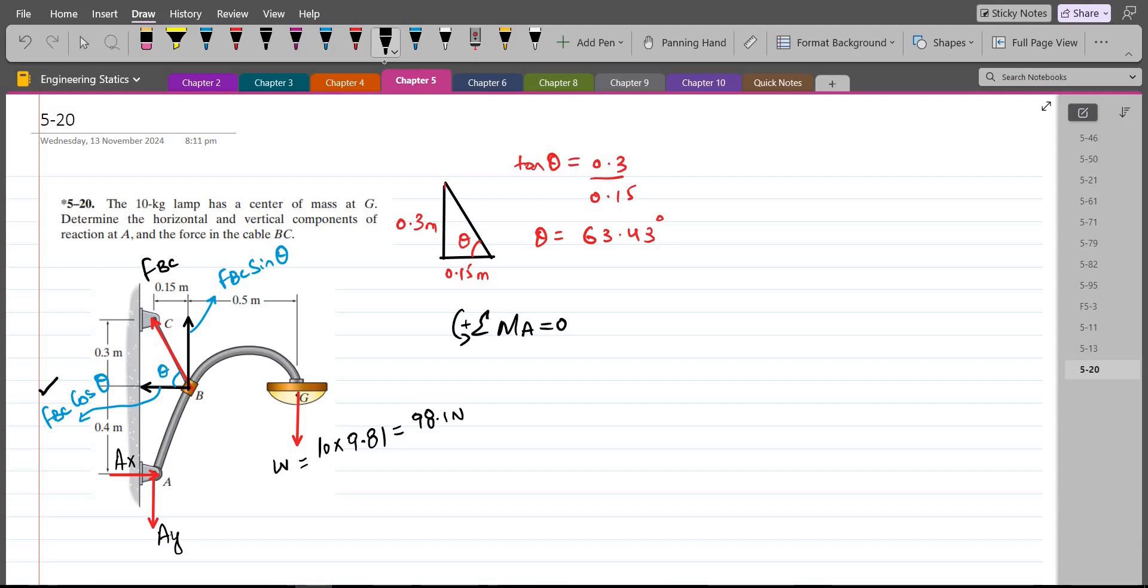This FBC cos theta force is trying to rotate the lamp in counterclockwise direction. And the moment arm is 0.4 meters. So the moment produced by this FBC cos theta force and theta is 63.43 degrees, and the moment arm is 0.4 meters.